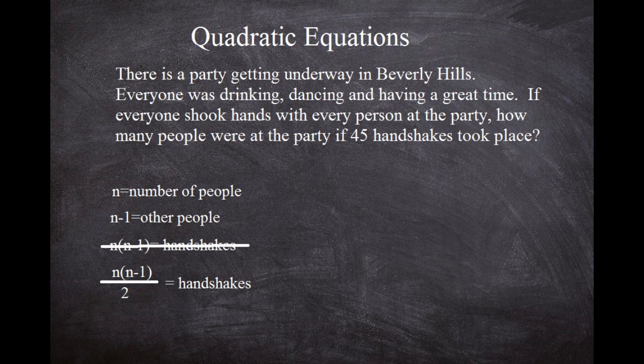We already know there were 45 handshakes at the party, so all we do is take n times (n minus one) over two and set that equal to 45. The two in the denominator is something we want to eliminate to make this easier to work with. To get that two out of the denominator, we multiply both sides by two — because if you had one-half and multiply by two, the twos cancel out. Remember, whatever you do to the left side you must do to the right side.